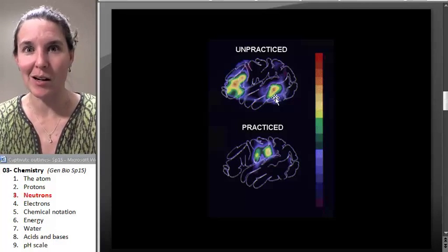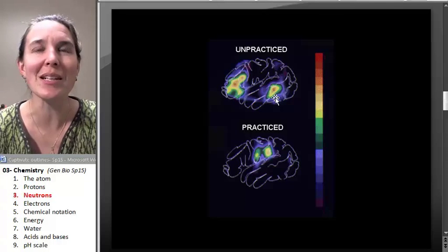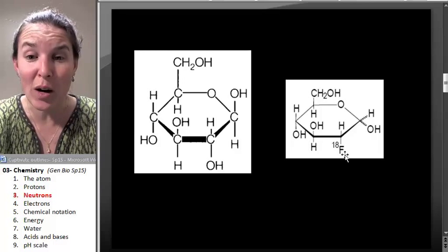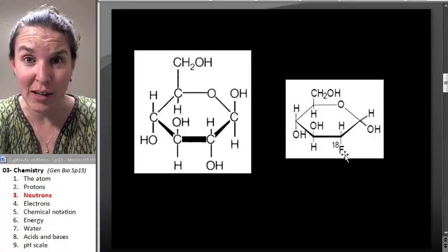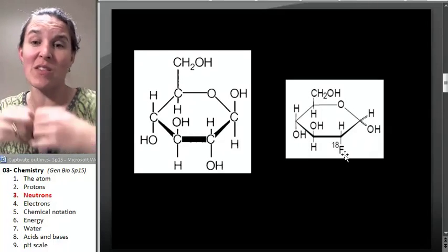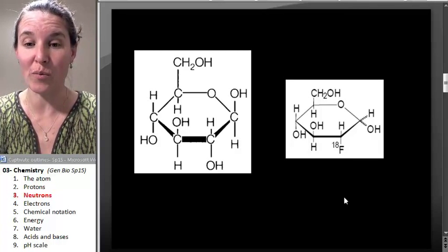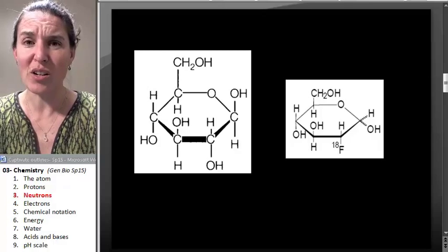Because remember, that glucose was glow in the dark. Why was it glow in the dark? Because it had this radioactive fluoride ion attached to it. So if you've got that little radioactive thing that's emitting light, you can actually use that for research.